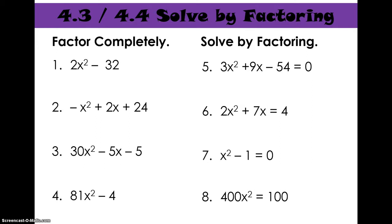So first, let's make sure we understand directions. The left side here is factor completely, so your answers for these will be sets of parentheses. That is factoring. The right side, five, six, seven, eight, these are solved by factoring. So you will first factor and you'll have the sets of parentheses, but your final answers will be x equals. So you need to know where you're going before you even get started.